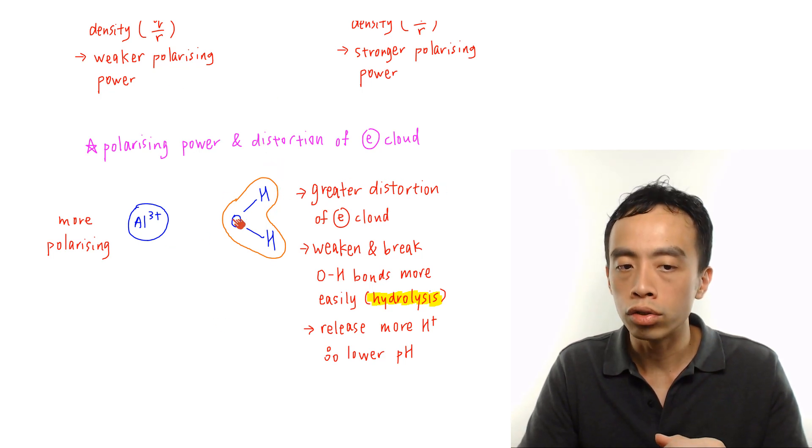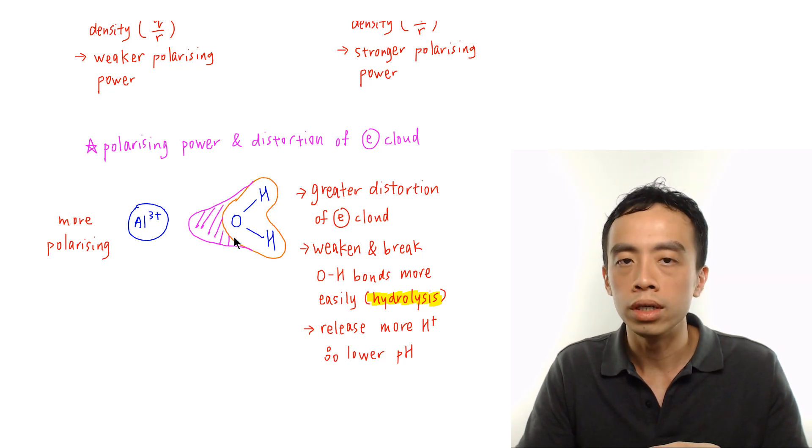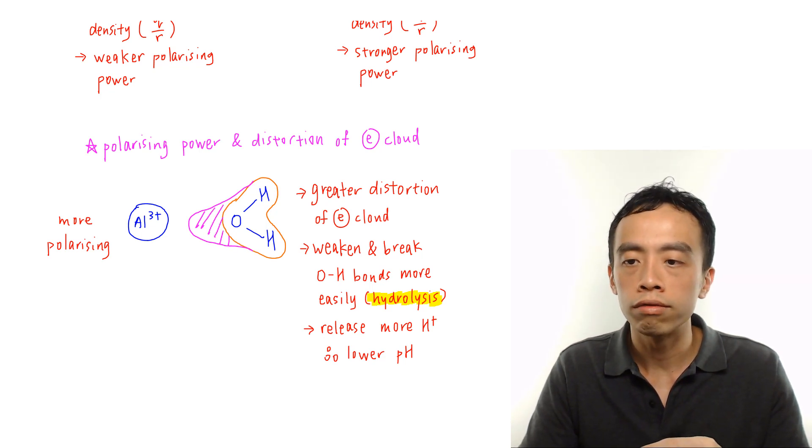So it can pull the electron cloud distribution closer to itself, and this portion that I have shaded here will just be the distortion of the electron cloud for water.